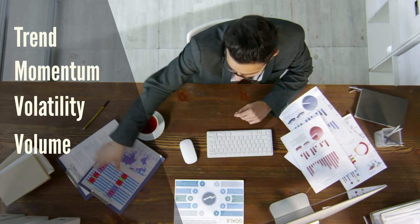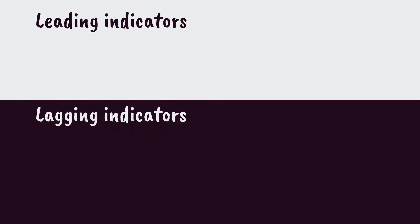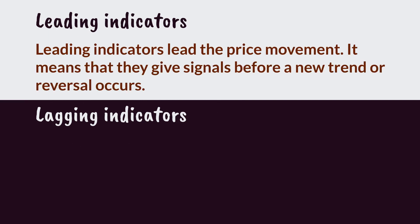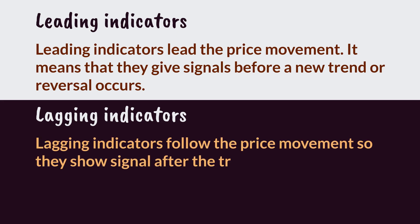They are categorized into two groups: leading and lagging indicators. Leading indicators lead the price movement, meaning they give signals before a new trend or reversal occurs. Lagging indicators follow the price movement, so they show a signal after the trend or reversal has started.